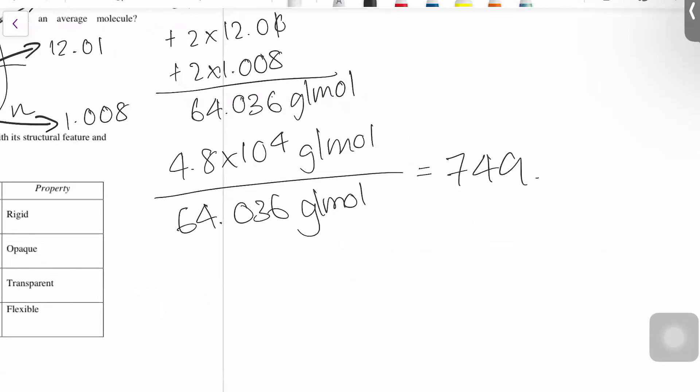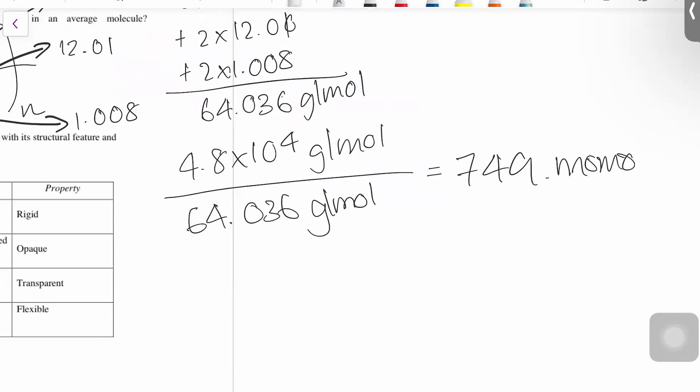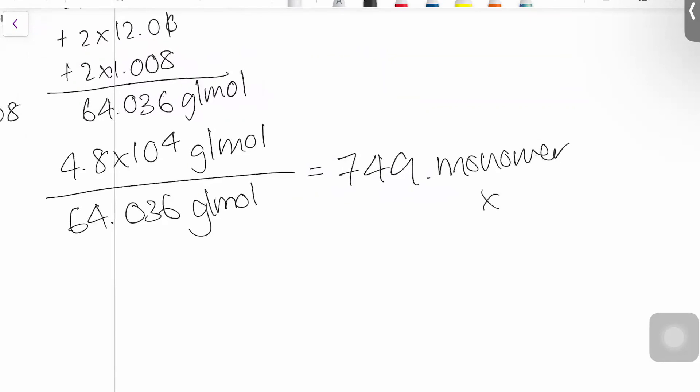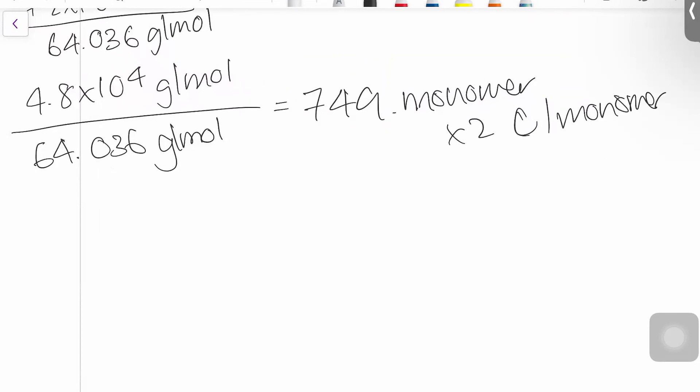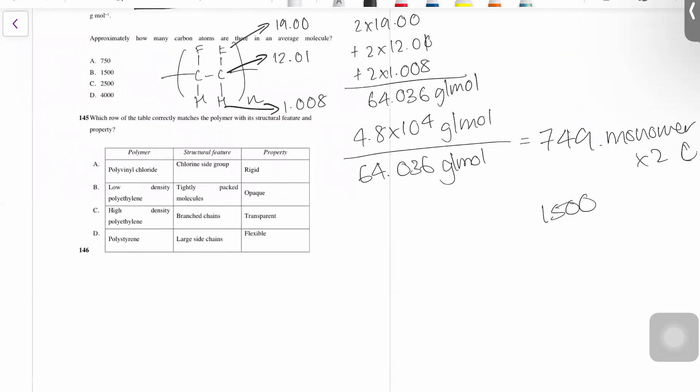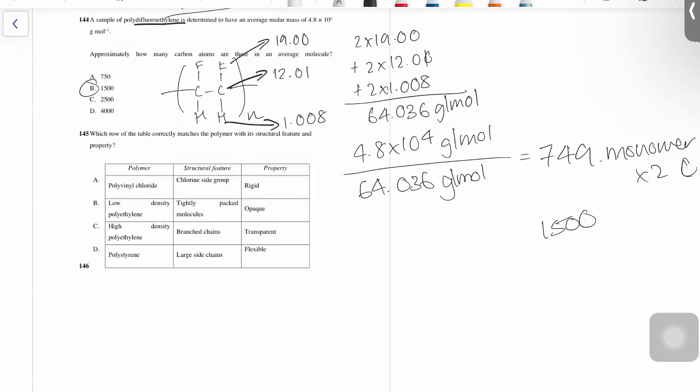So this is my number of monomers. But my monomer has two carbon atoms each. So it's times two carbons per monomer. So that's going to be 750 times two, which is about 1,500 carbon atoms. So popping that in here, your answer for this one's going to be B.